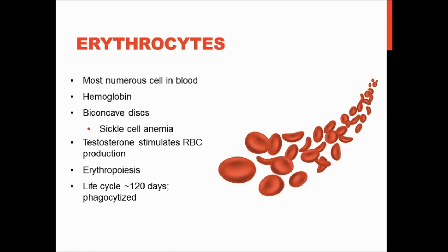This is a problem with conditions like sickle cell anemia, when the red blood cells turn into a sickle-like shape. Those sickled red blood cells can clump together and cause really life-threatening conditions. Testosterone stimulates red blood cell production, so men typically have a higher hematocrit because they have more red blood cells circulating, allowing them to carry more oxygen and generally have higher endurance.